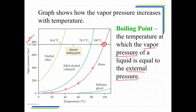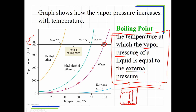When vapor pressure matches external pressure, that is the boiling point. At that point, a bubble can form at the bottom of the pot and rise because the pressure inside the bubble matches the pressure outside. Before that, external pressure is greater and forces the bubble to collapse — you'll see bubbles form and collapse at the bottom before the temperature is high enough for them to rise and pop.